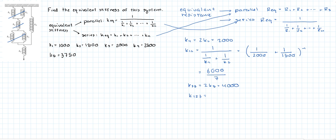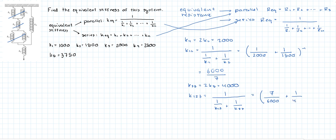Now let's find k_123. We replaced k_11 and k_2 in series by one equivalent, and that's going to be in series with k_33, so we use the series law: (1/k_12 + 1/k_33)^(-1). k_12 was 6000/7, so 1 over that is 7/6000, plus 1/k_33 which is 1/4000.